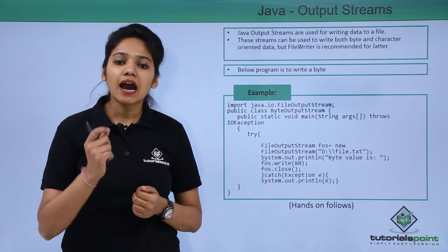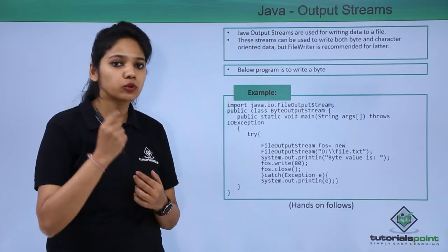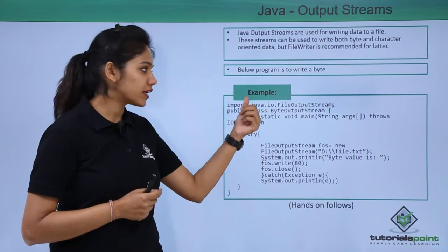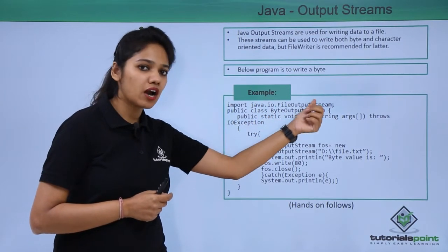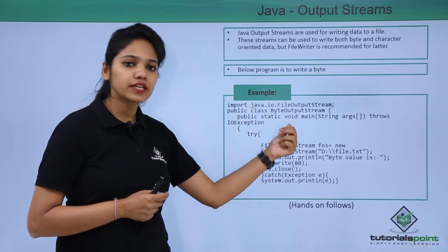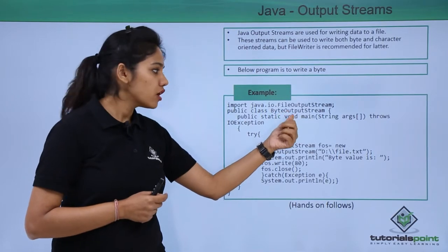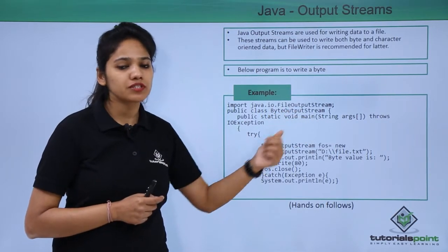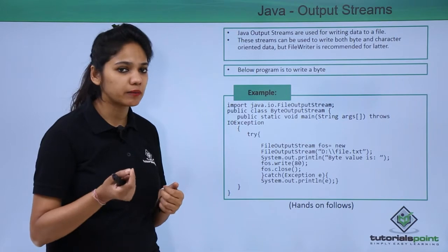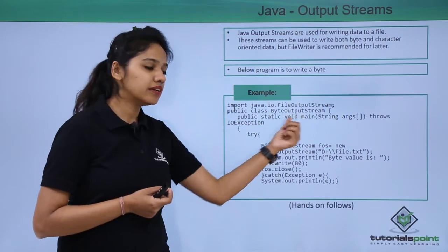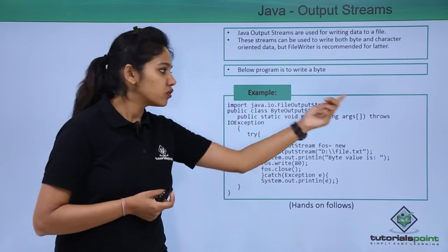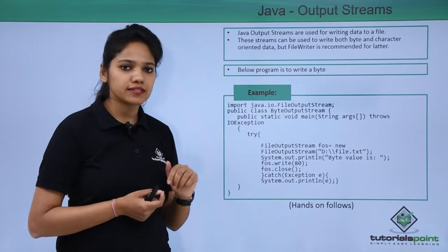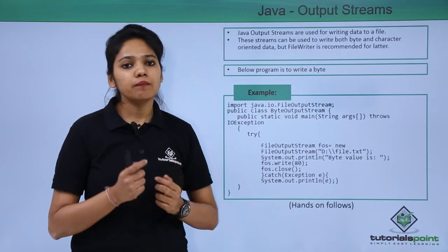In this program, first we will see how you can write a single byte to a file. We have used the package java.io.FileOutputStream and created a class called ByteOutputStream. In the main method, we have declared what kind of exception it may throw, that is throws IOException.